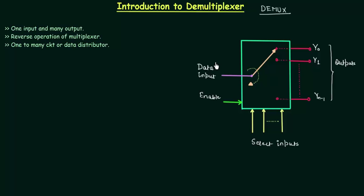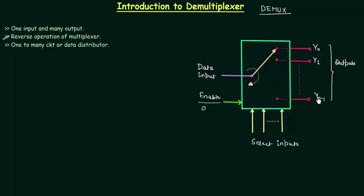In case of multiplexers we were having many inputs but single output. So we can say that demux is having the reverse operation of multiplexer. It receives one input and distributes it over several outputs depending upon the select inputs. We also have an enable input. This enable will decide whether this circuit has to operate or not. If this enable is zero or low, the circuit is not operational and we will have zero at all the output terminals.